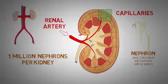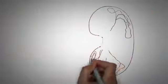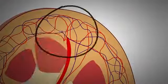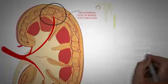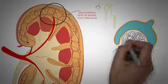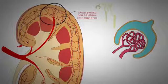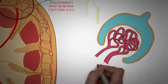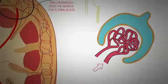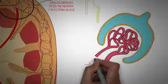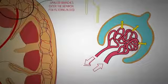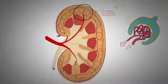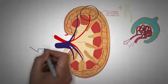The renal artery enters the kidney and divides into many smaller branches which ultimately divide into minute branches known as capillaries. Each of these capillaries enters the nephron and forms a tuft of blood vessels in a cup-shaped structure known as the Bowman's capsule, where filtration of blood takes place. The blood enters the nephron through one vessel and leaves via another. Waste products and water leave the blood into the nephron, while the pure blood exits and ultimately drains into the renal vein.